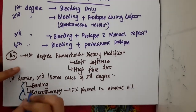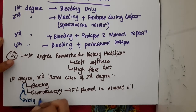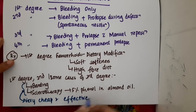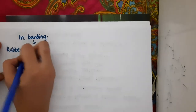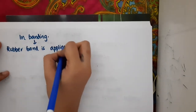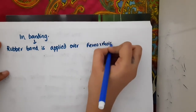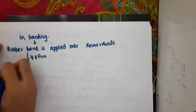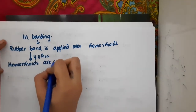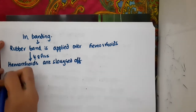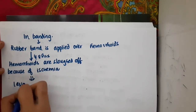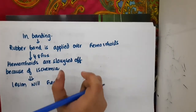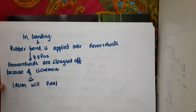Both banding and sclerotherapy are very cheap and effective. In banding, a rubber band is applied over the hemorrhoids. After 48 hours, the hemorrhoids are sloughed off due to ischemia, as the rubber band stops blood supply to the hemorrhoid region, and the lesions then heal.